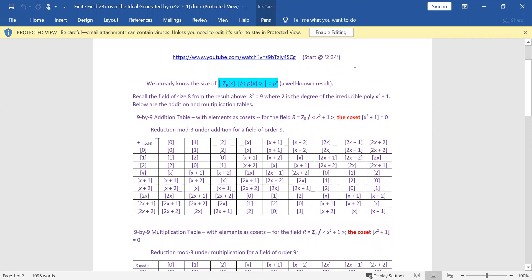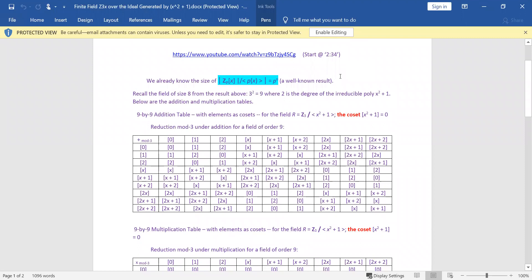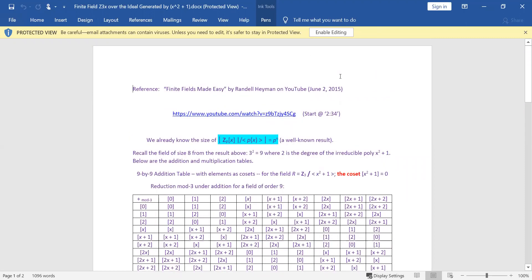So the key thing here is that there are two tables, one for multiplication, one for addition and let me see if I can get some annotation going here. Here's the field, the field that we're interested in.